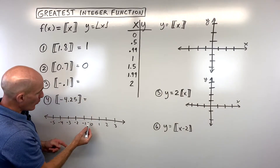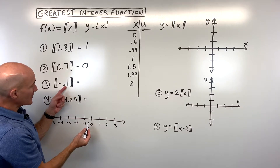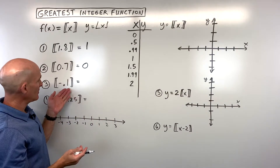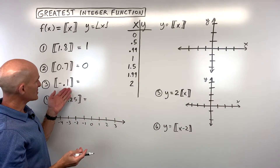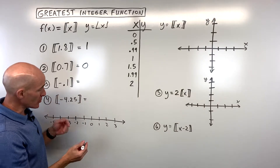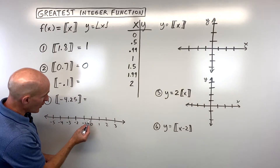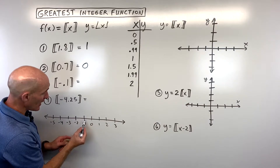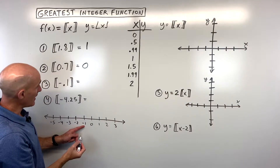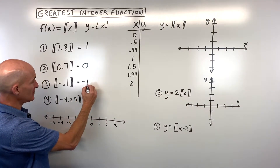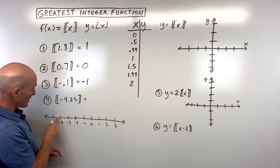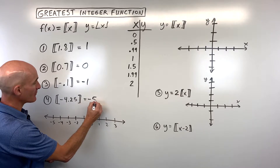Negative 0.1 might confuse some students because that's really close to 0 — wouldn't that be 0? Well, negative 0.1 is right here. We round to the left on the number line to the integer to the left, which is going to be negative 1. And negative 4.25 — that's right here. You're going to round to the left, and that's going to be negative 5.